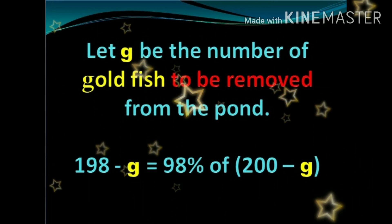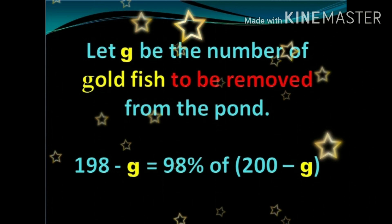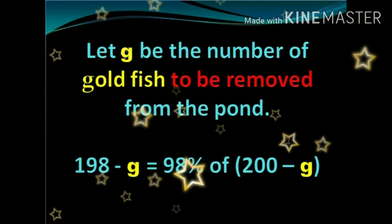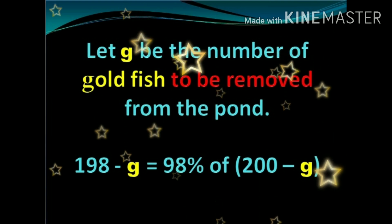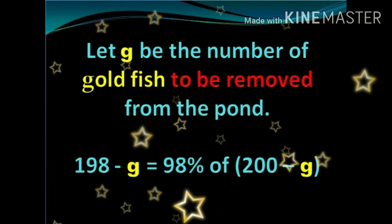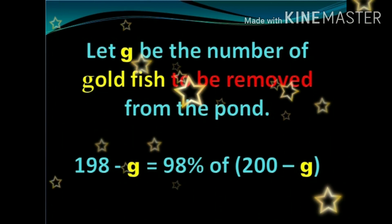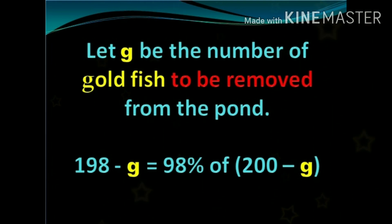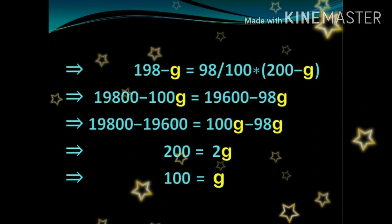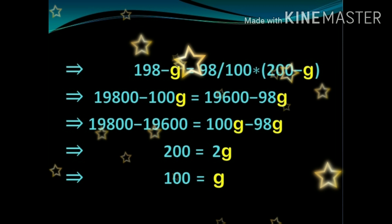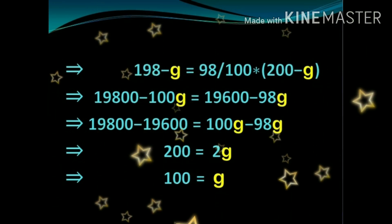Let G be the number of goldfish to be removed from the pond. That gives us the equation: (198 − G), the number of goldfish remaining, should equal 98% of the total (200 − G), the number of goldfish to be removed.